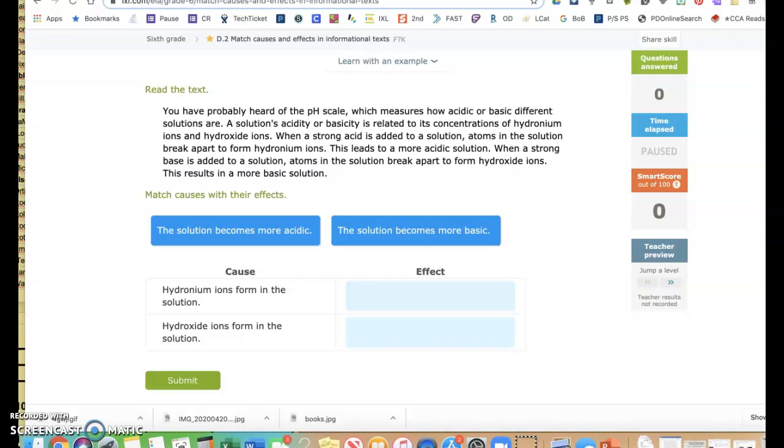Alright guys, we're going to look at IXL D.2, Match Causes and Effects in Informational Text. So basically, remember, a cause creates an effect. You're looking for something that made something else happen.